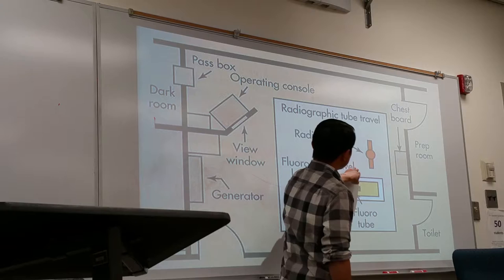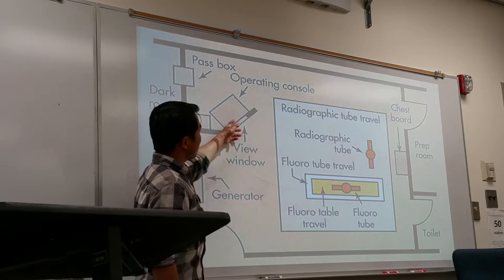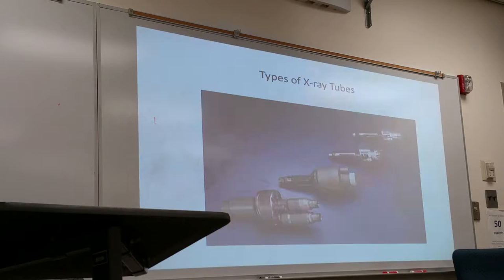Two things you notice most when you walk into the x-ray room are the x-ray table and the x-ray tube. Usually the exposure area is in the same room, but there's a divided area to prevent radiation from reaching you. There's usually a lead-lined window so you can see the patient during the exposure.